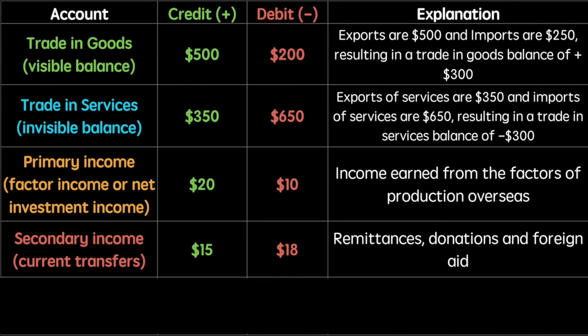The secondary income account includes current transfers, which is simply money that is given without something of economic value provided in return. Such examples include remittances, which occur when foreign workers transfer money to their home country. Also included are charity donations and foreign aid. The money received is a credit, but the money paid out is a debit. The balance in this item is negative $3.